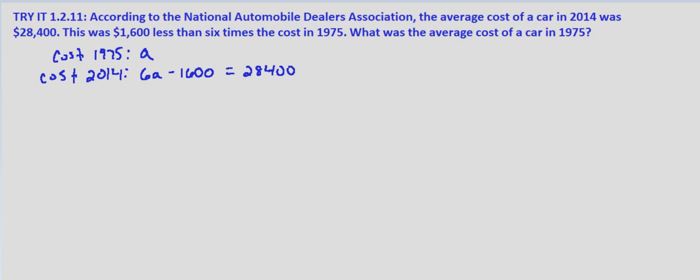So all we have to do is solve for A in order to find the cost in 1975. So we'll add $1,600 to both sides.